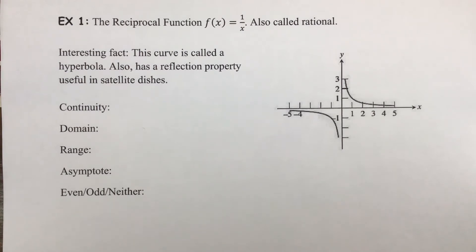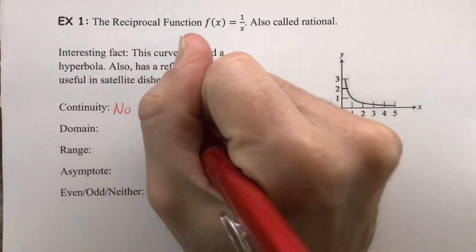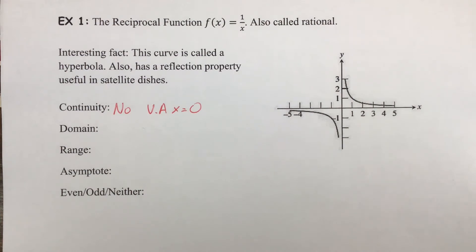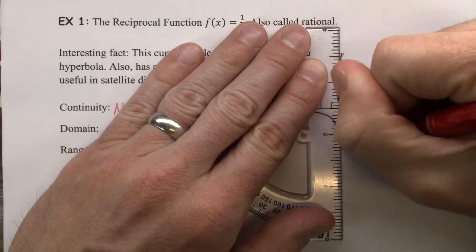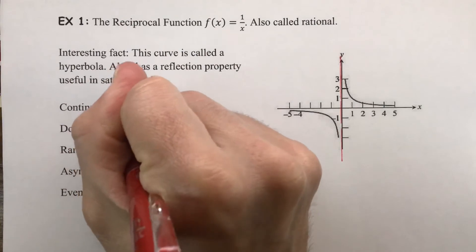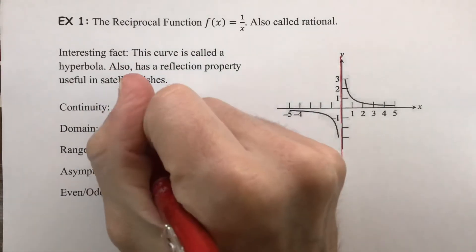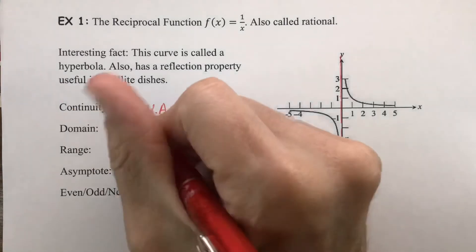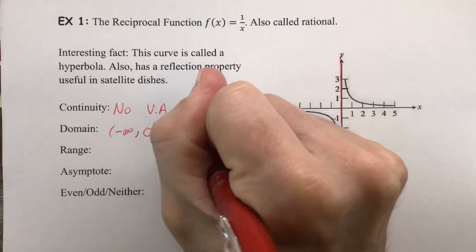Does the reciprocal function have continuity? No, it does not — it has a vertical asymptote at x = 0. Because of that vertical asymptote and the discontinuity, the domain is broken apart. It goes from negative infinity, but when it reaches zero it is open — we do not include it. It then picks up right after zero and continues to infinity.